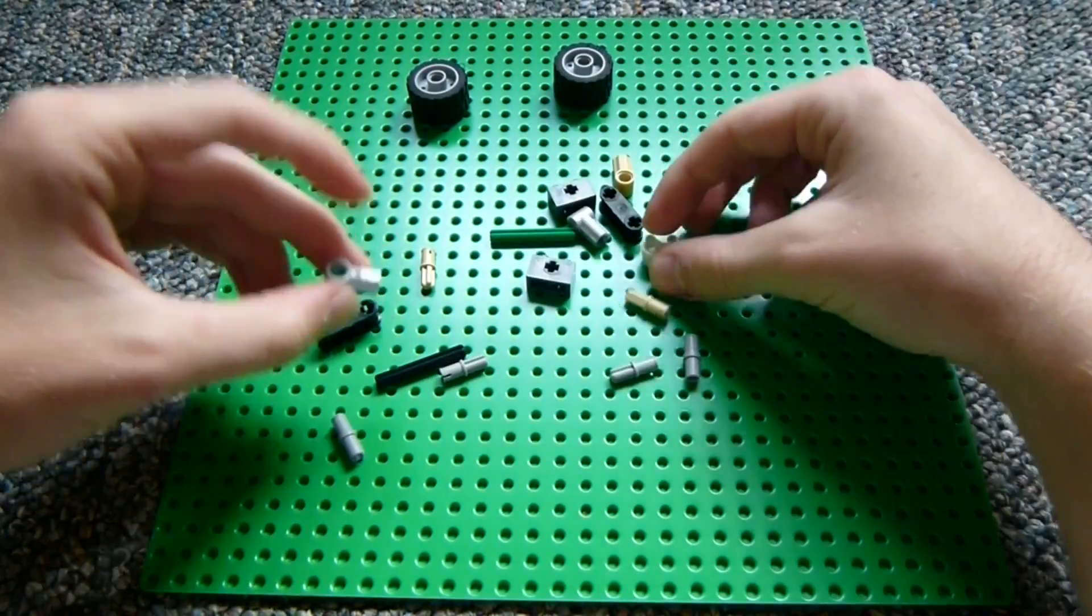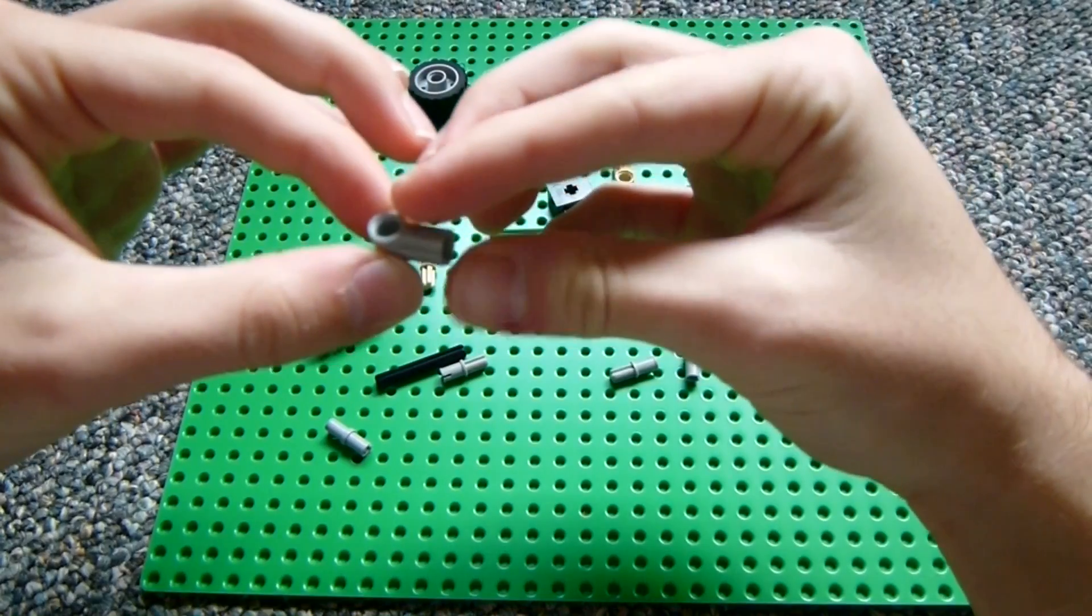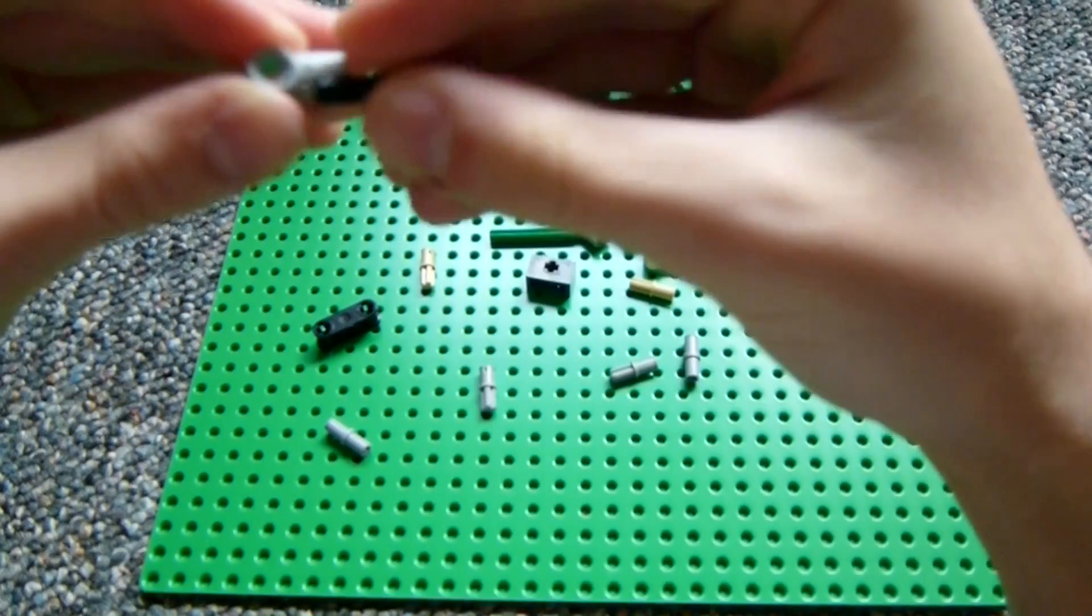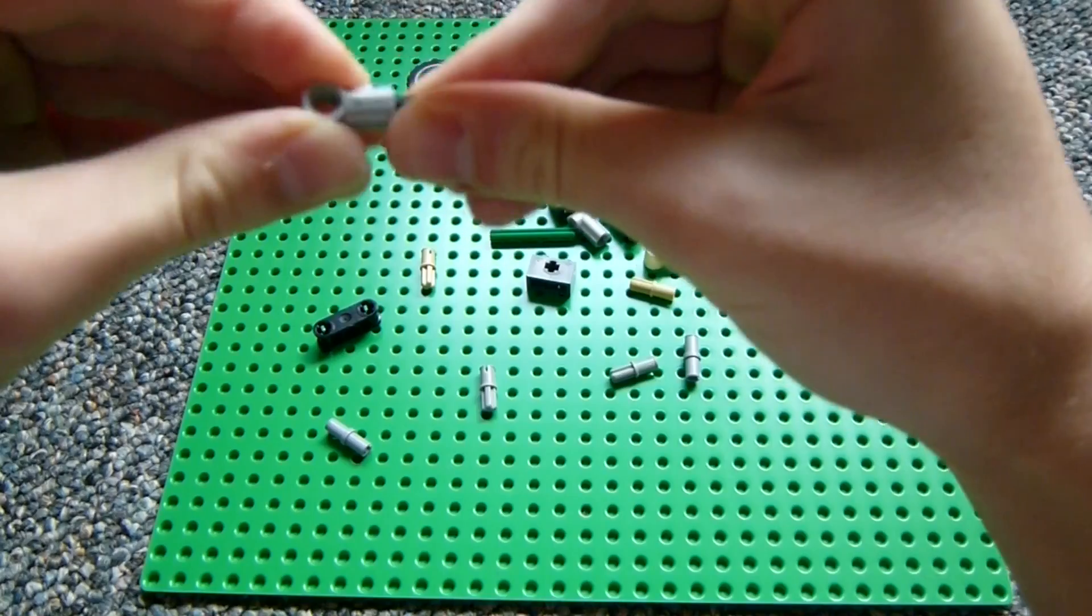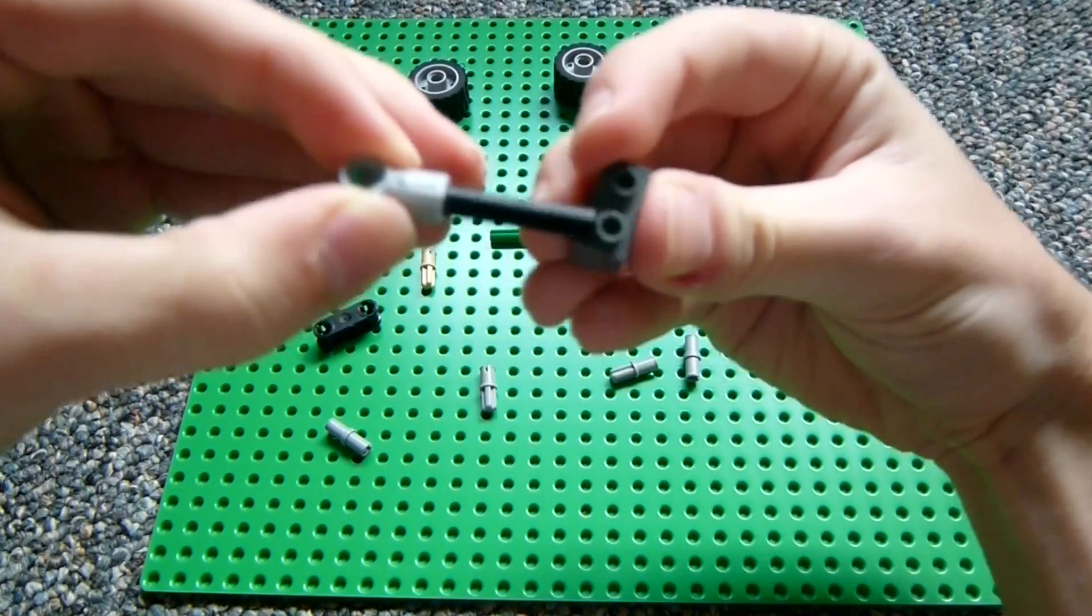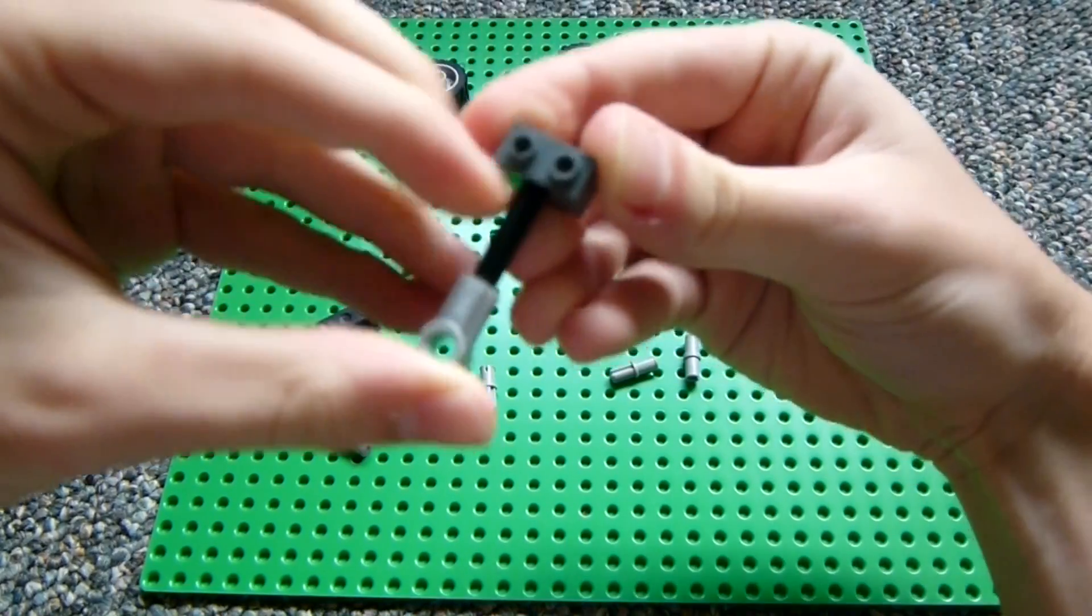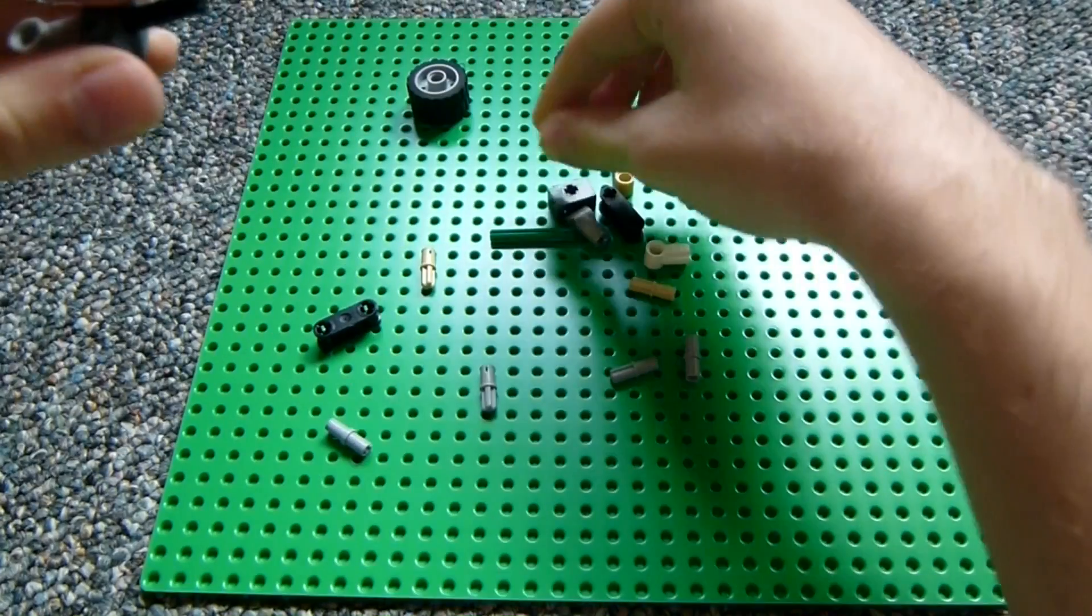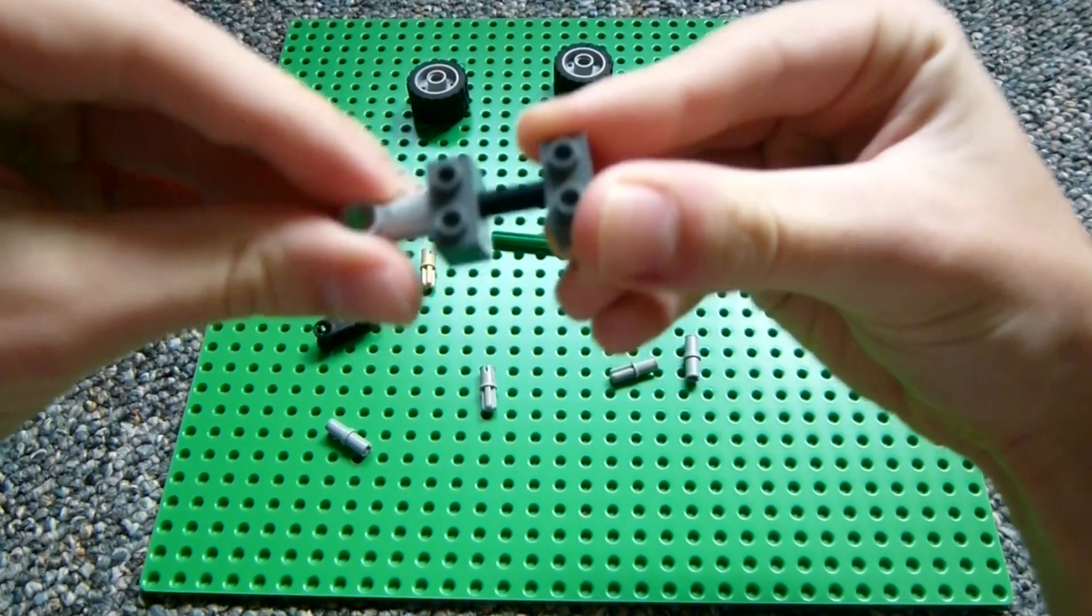So what you'll do is you'll take, for these pieces, I don't really know how to describe Technic pieces because I don't often use Technic builds, but you'll put a four-length rod in there. And you can expand this to be bigger, but I'm going with four-length.